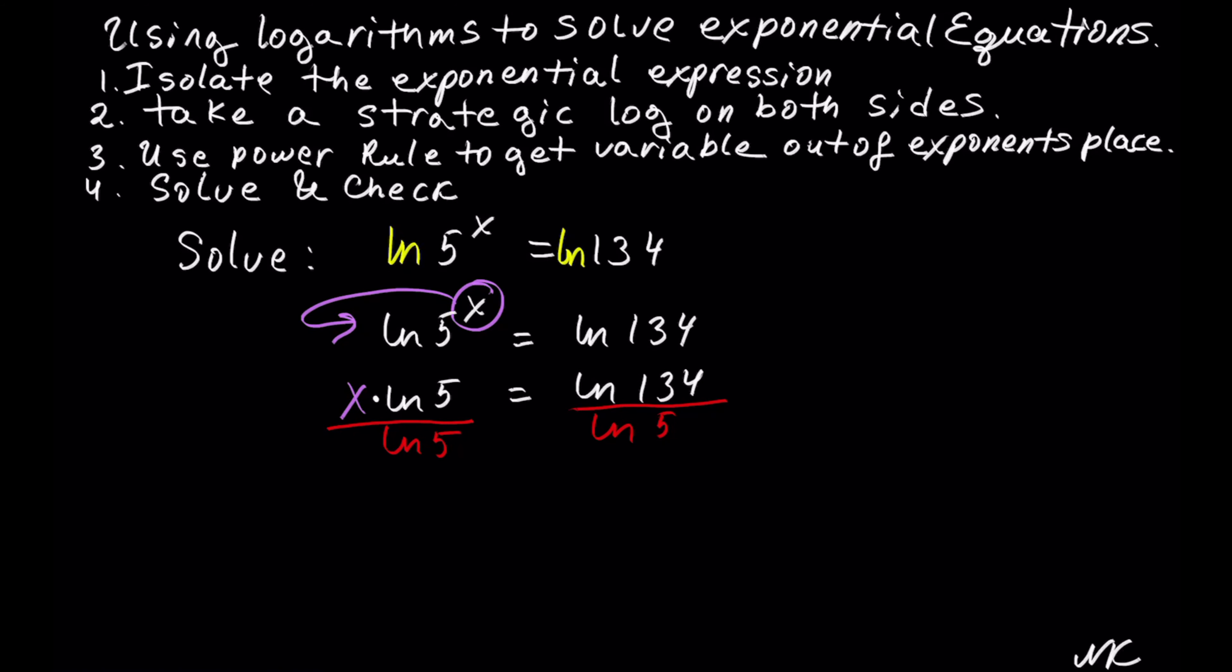ln of 5 out of ln of 5 cancel into 1, so we get x equals... On the right we have ln of 134 out of ln of 5.